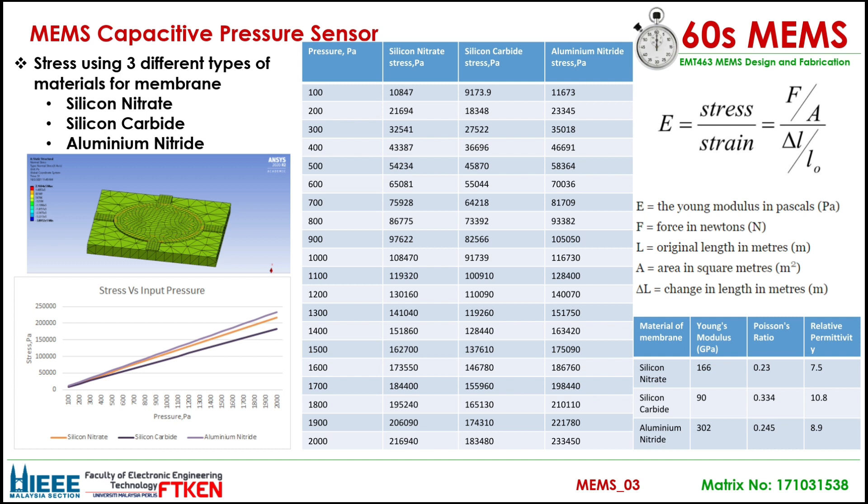The input pressure had been set from 100 Pa to 2000 Pa. The table shows the reading of stress for each material when pressure is applied. The Young's Modulus formula shows stress over strain. The pressure will affect the force since the formula of pressure is force over area. Pressure will increase as stress increases, and capacitance value will also increase when the stress increases.